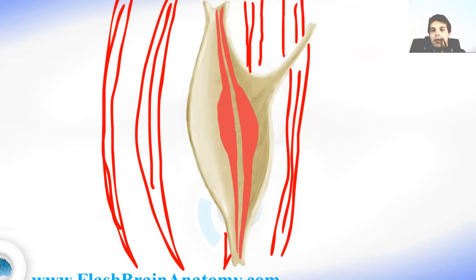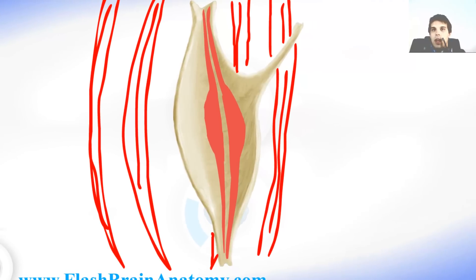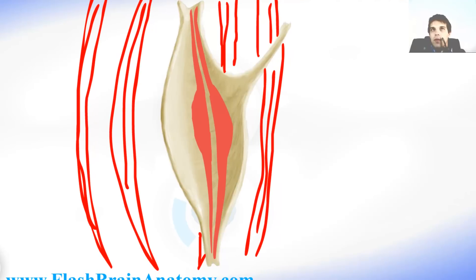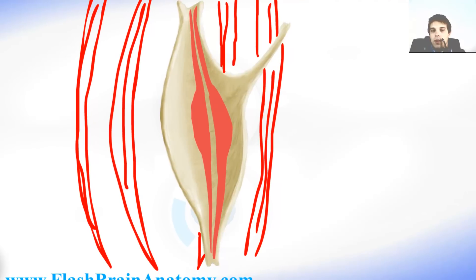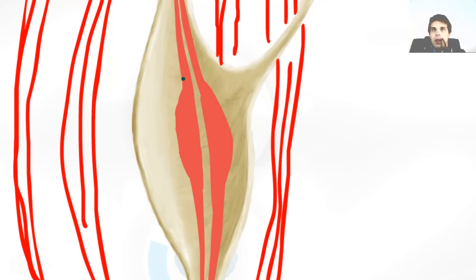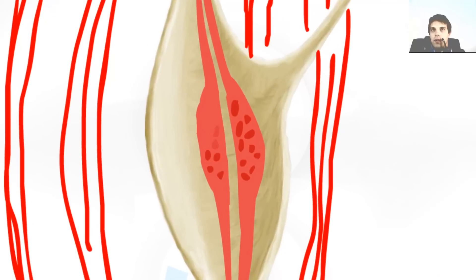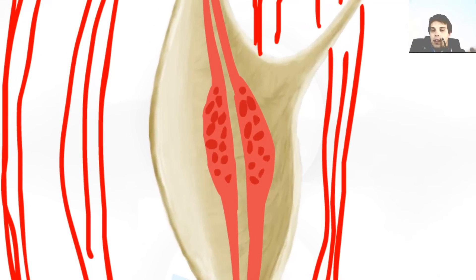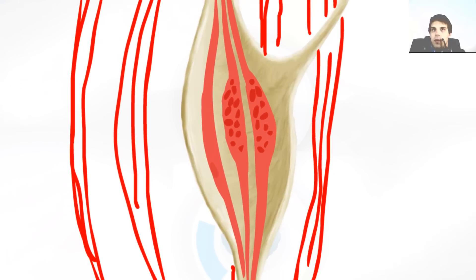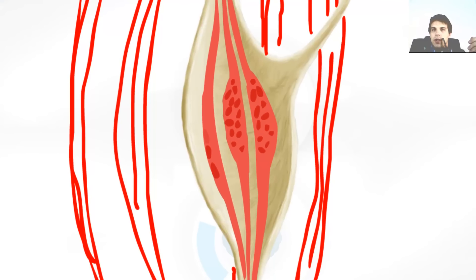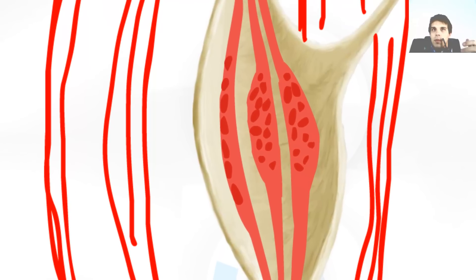Not all intrafusal muscle fibers are the same. I will talk about two types. The first type is the nuclear bag fibers — they have that name because they look like a bag in the center of the fiber, and inside that bag there are nuclei of the muscle. The second type is the nuclear chain fibers, called that because the order of nuclei is similar to a chain.